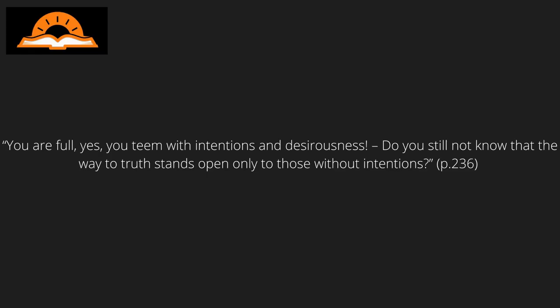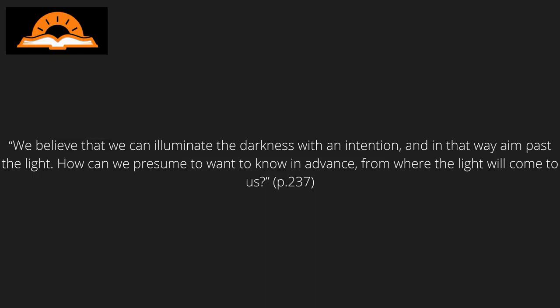Jung continued to struggle in the desert of his soul, and Jung's soul argued that he was too impatient and that intentions and desire were limiting him too much. 'You are a fool — you teem with intentions and desirousness. Do you still not know that the way to truth stands open only to those without intentions?' Jung wrote: 'We believe that we can illuminate the darkness with an intention, and in that way aim past the light. How can we presume to want to know in advance from where the light will come to us?' According to Jung, it took him 25 nights in the desert before he could speak to his soul as an independent entity, separate from himself. Jung observed that the spirit of the depths is full of cleverness and that one cannot free oneself from the spirit through more cleverness and more knowledge. Instead, one must accept that which cleverness hates the most: simple-mindedness. The supreme meaning, according to Jung, is found by combining cleverness with simple-mindedness, whereby cleverness can conquer the world and simple-mindedness can conquer the soul.